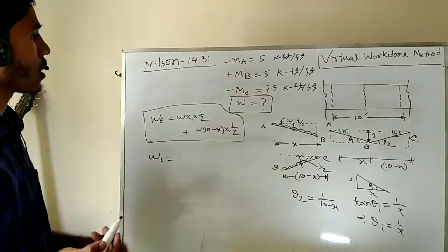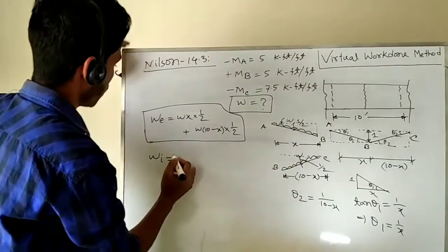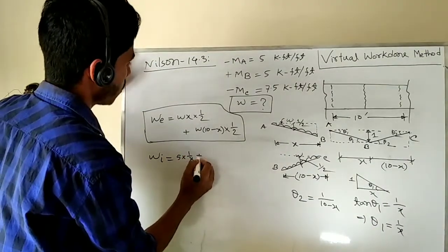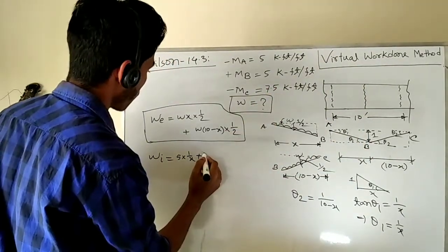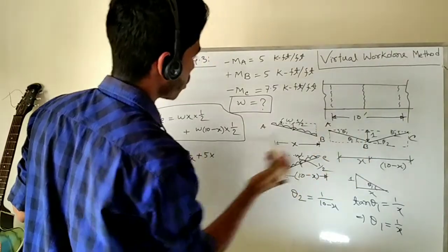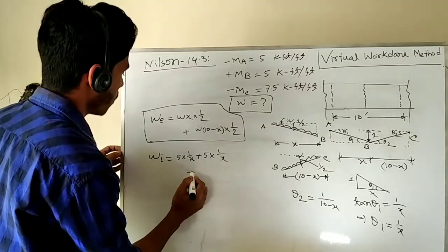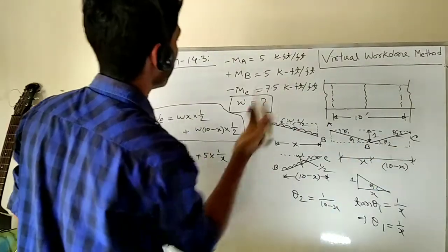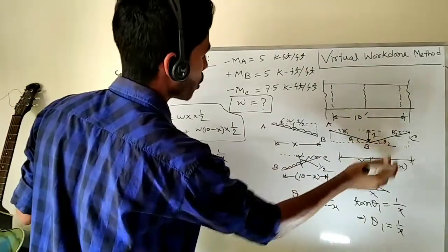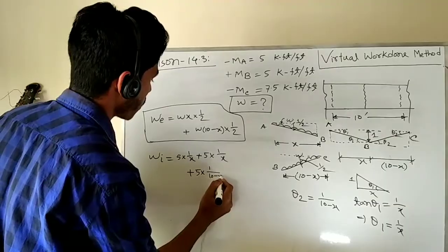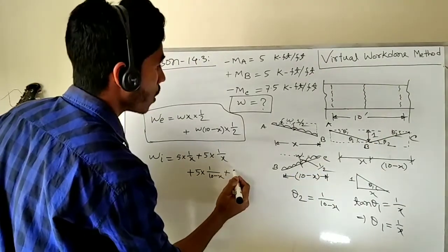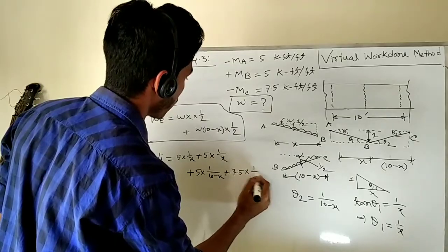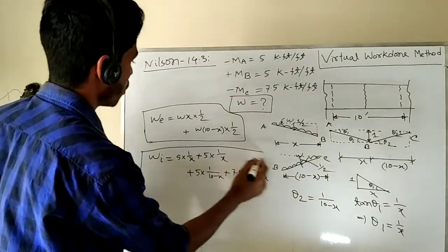The internal work done is computed by summing moment times rotation at each yield line. Moment at A is 5, with rotation theta 1 = 1/x. Moment at B (AB side) is 5, with rotation theta 1 = 1/x. Moment at B (BC side) is 5, with rotation theta 2 = 1/(10 − x). Moment at C is 7.5, with rotation theta 2 = 1/(10 − x). Total internal work done = 5/x + 5/x + 5/(10−x) + 7.5/(10−x).